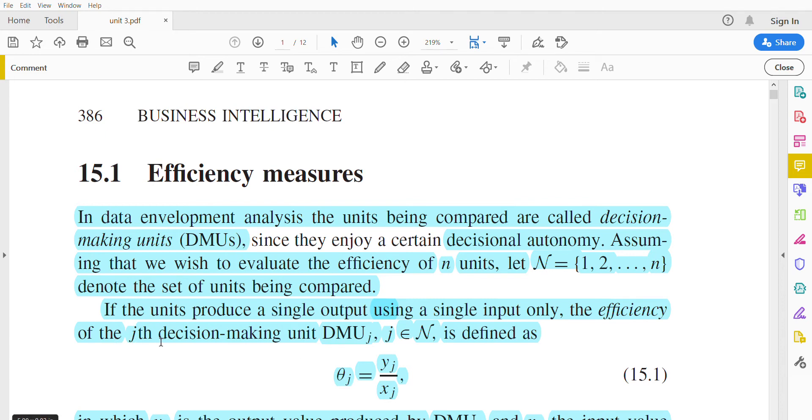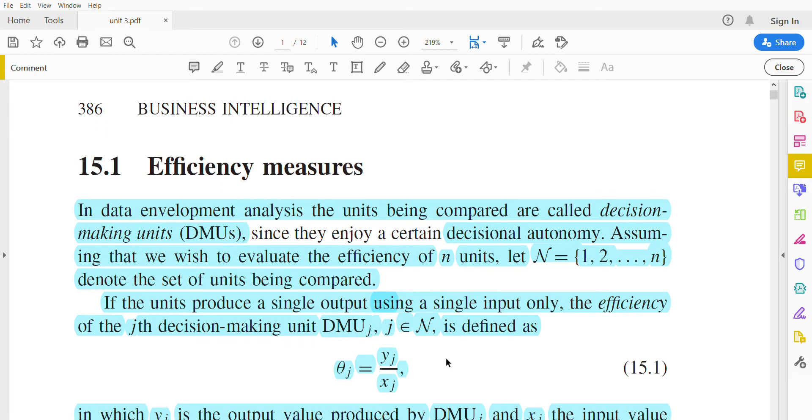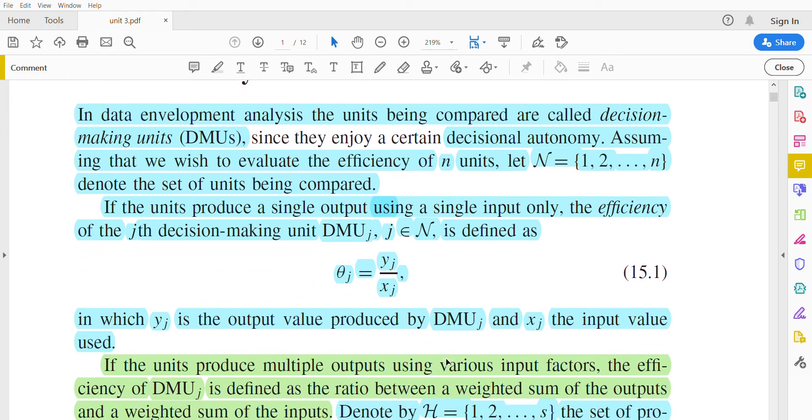The efficiency of the jth DMU is defined with an equation: θ_j equals y_j divided by x_j. Here, y represents the output value produced by the DMU, and x represents the input value produced by the DMU.